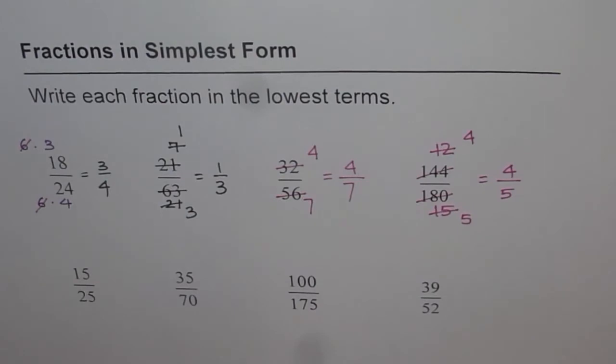Now 4 over 5 are in the lowest terms. They do not have any common factor.